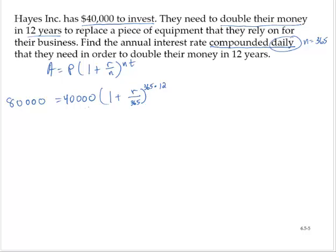Let's simplify things a little bit. 365 times 12 is 4,380. So I have 80,000 is equal to 40,000 times 1 plus r over 365 to the 4,380th power.